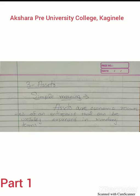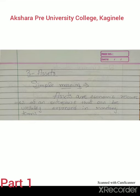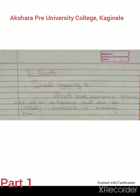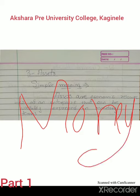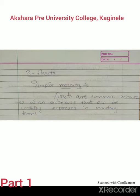The third term is assets. Assets are nothing but property. The simple meaning of asset: assets are economic resources of an enterprise that can be usefully expressed in monetary terms. Which resources cannot be expressed in money — those are not called assets. Assets are economic resources of an enterprise that can be usefully expressed in monetary terms.